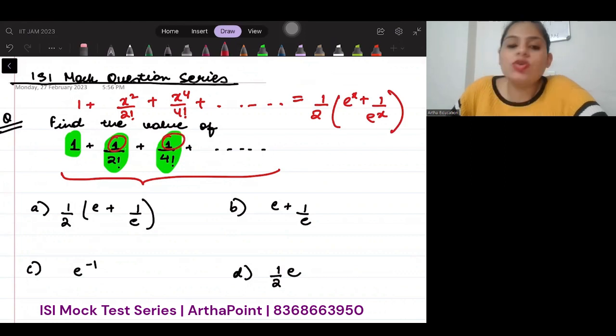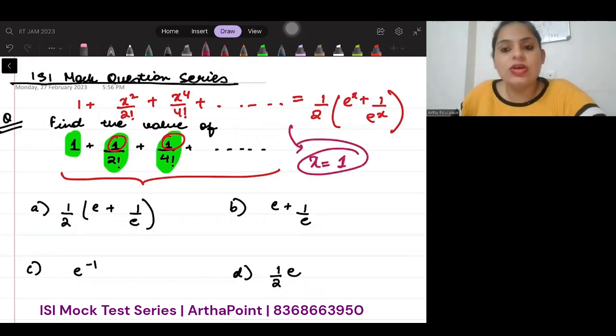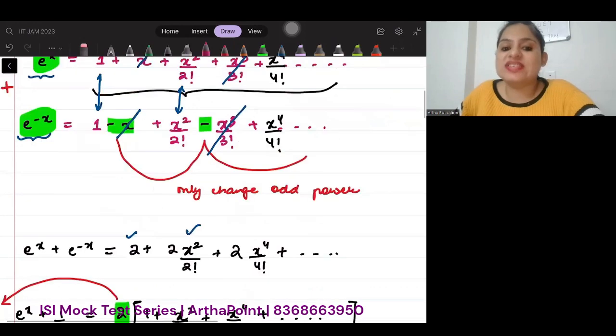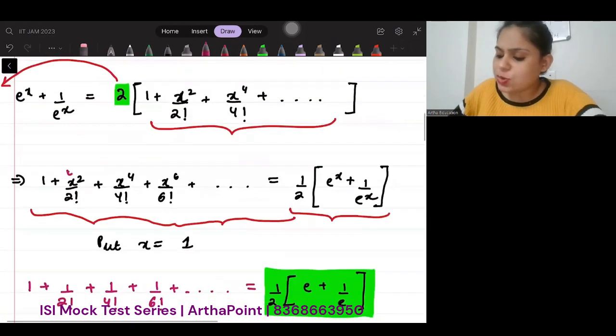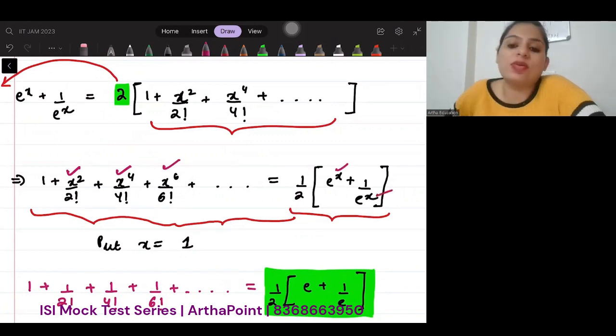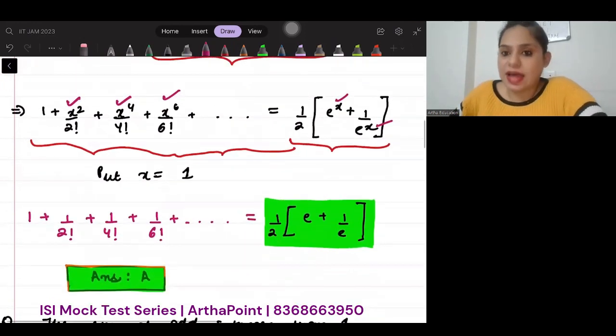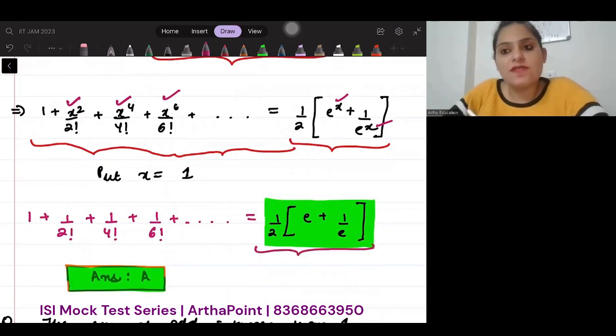I need 1 in the numerator. So, it's very simple. Just go ahead and put x as 1. So, when you will go ahead and put x as 1, all these would become 1, 1, 1 and here also it will be e to the power 1 and e to the power 1. So, what is going to happen is that your final answer will be half e plus 1 by e.